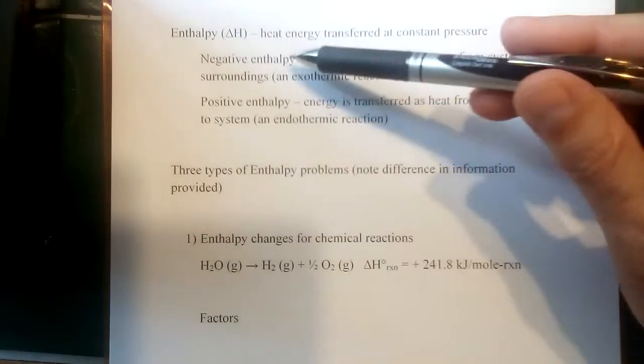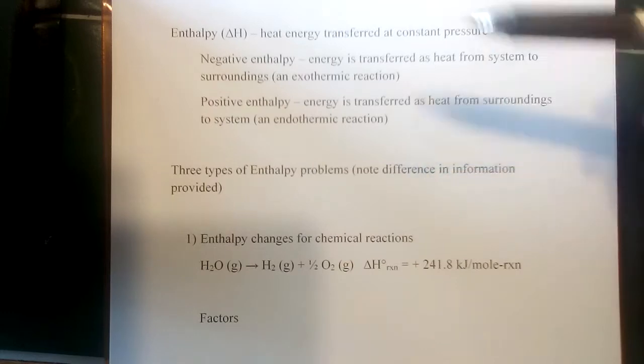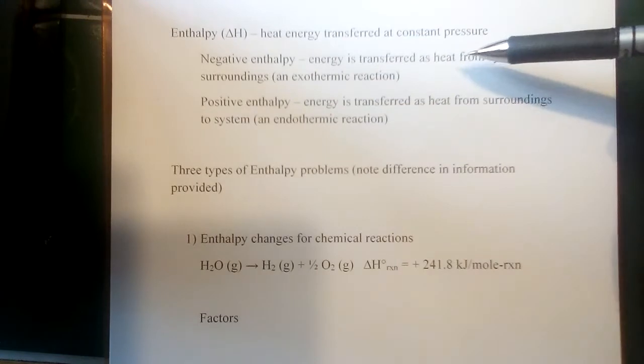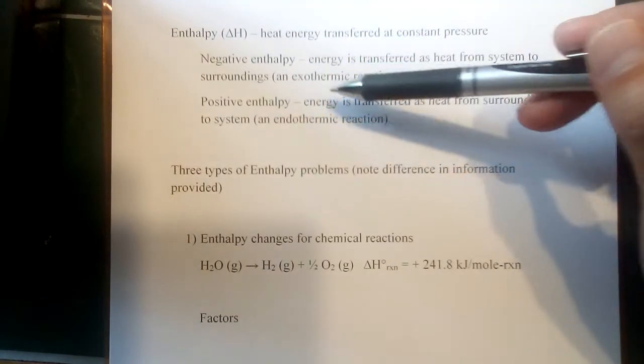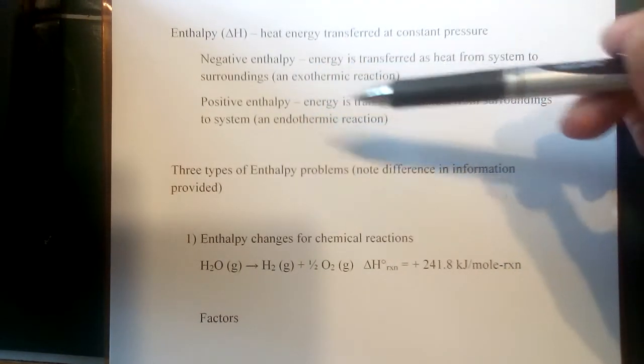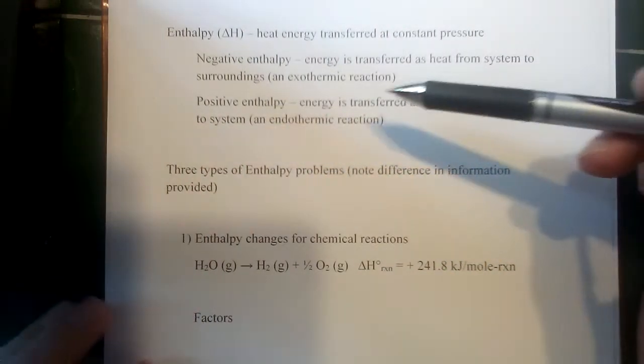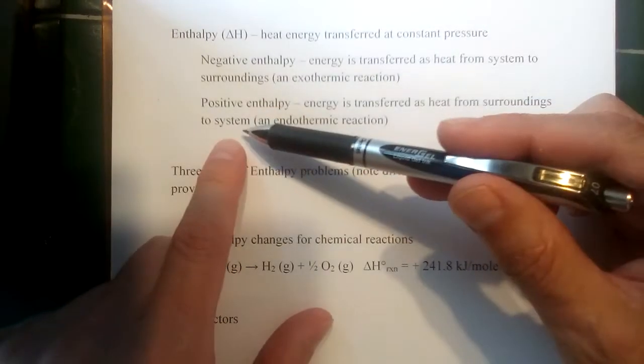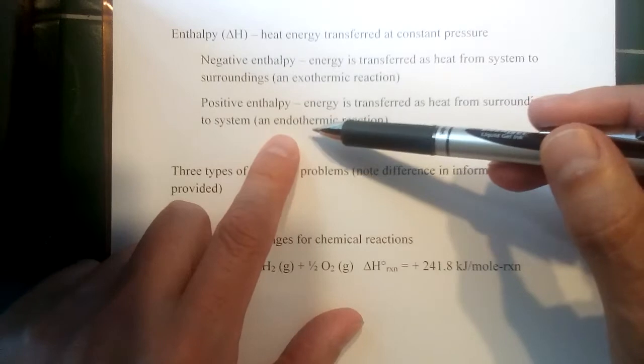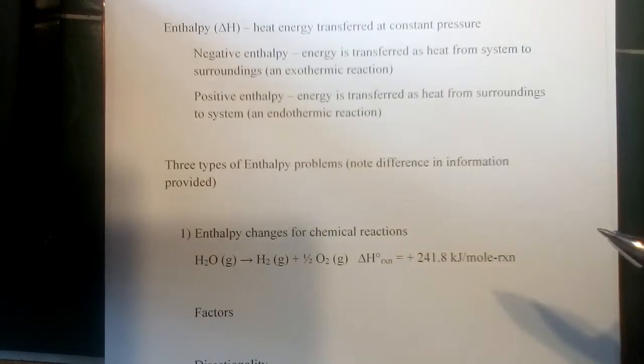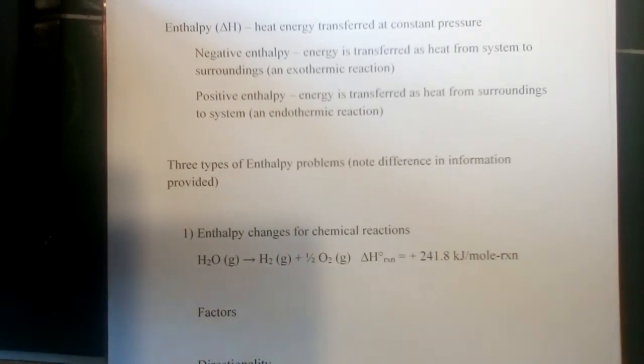And because of those two situations, we really want to be aware of the sign of the enthalpy change. So if enthalpy is negative, that means energy is transferred as heat from the system to surroundings. We call that an exothermic reaction. So exo for outside, heat is going out. If enthalpy is positive, that means energy is transferred as heat from the surroundings to the system. This is called an endothermic reaction. So endo for inside, heat is going in. So it's helpful to keep that in mind. Negative enthalpy, exothermic reaction; positive enthalpy, endothermic reaction.